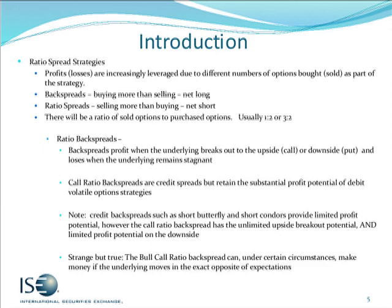Either ratio spread will have a ratio of sold to purchased options, usually done on a one-to-two or two-to-three basis. Ratio backspreads profit when the underlying breaks out to the upside or towards the downside, and lose when the underlying remains stagnant. So they are somewhat of a volatility play in the sense that we're looking for a sharp movement. With the ratio backspread, we're looking for increased volatility, but in this case we need to have a specific direction in mind.